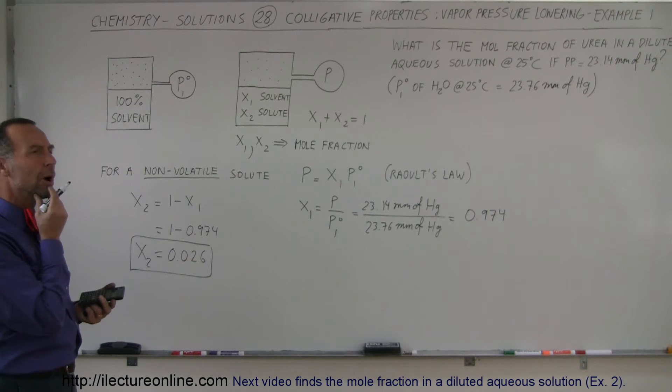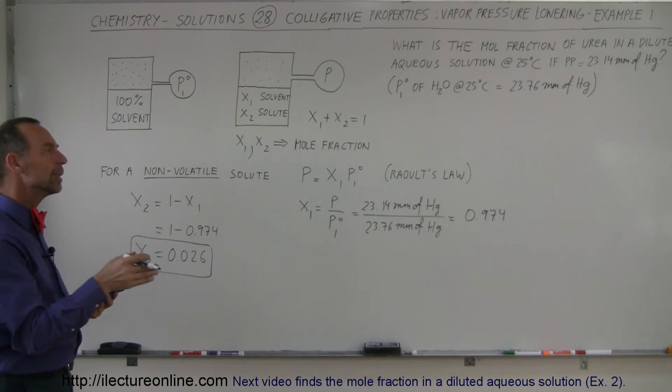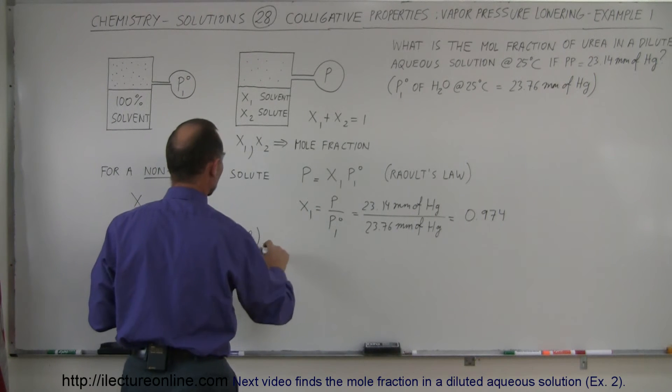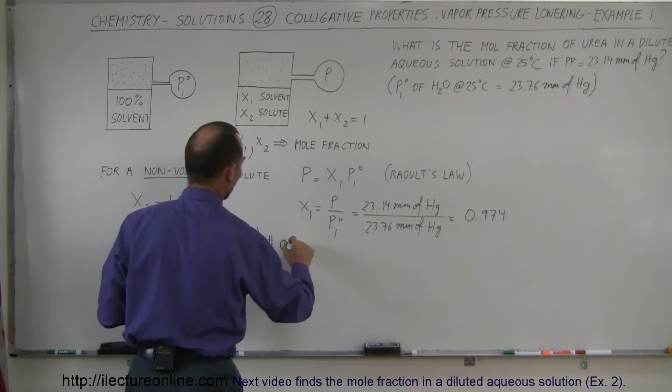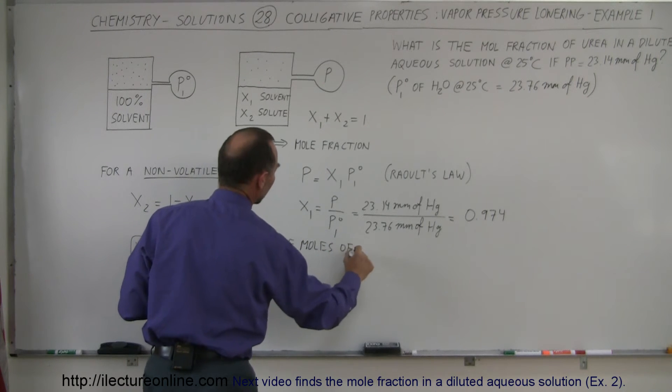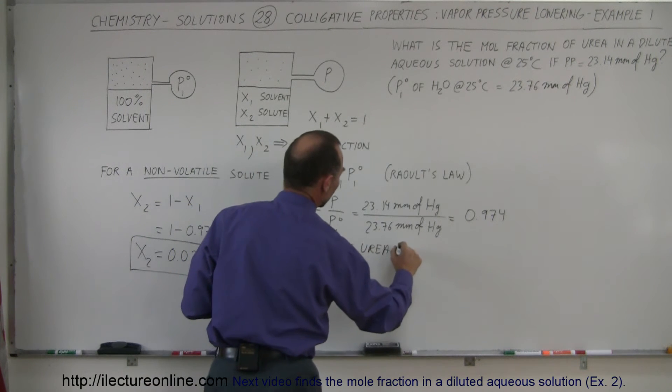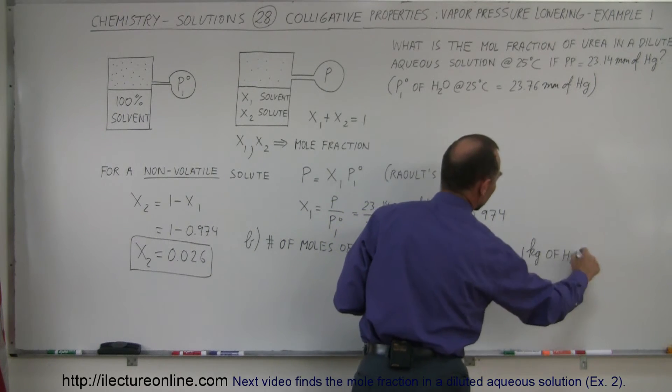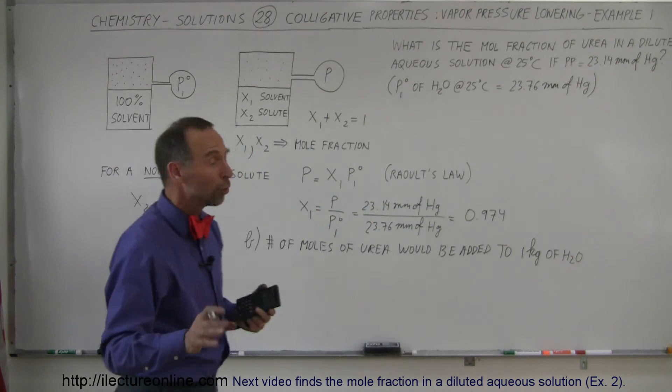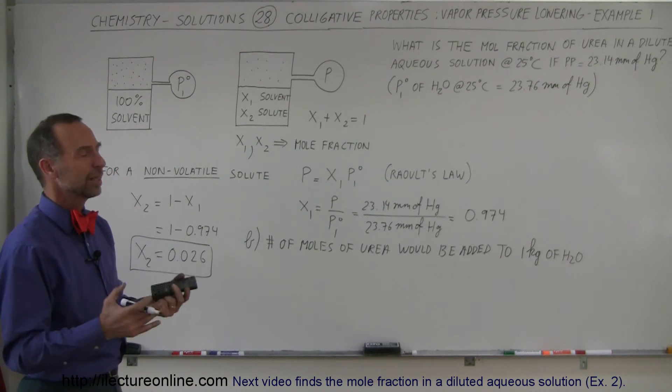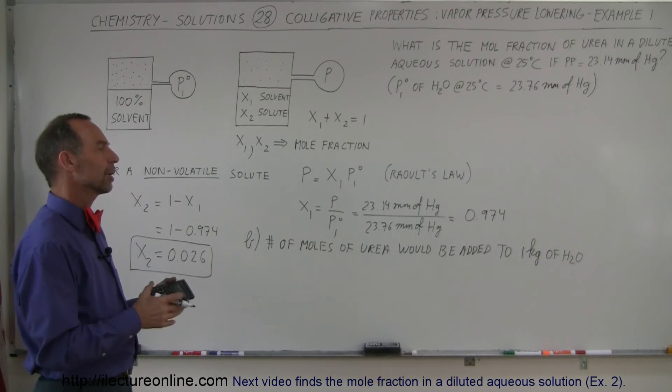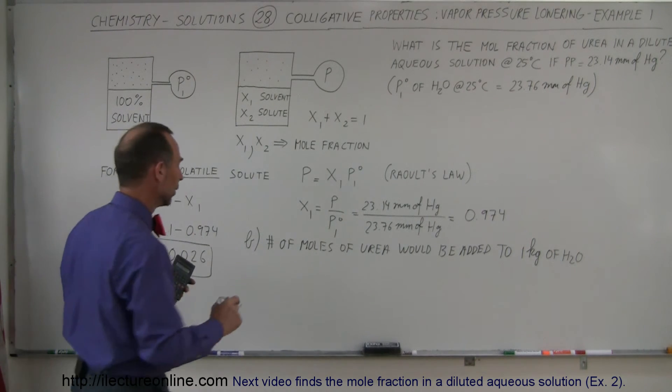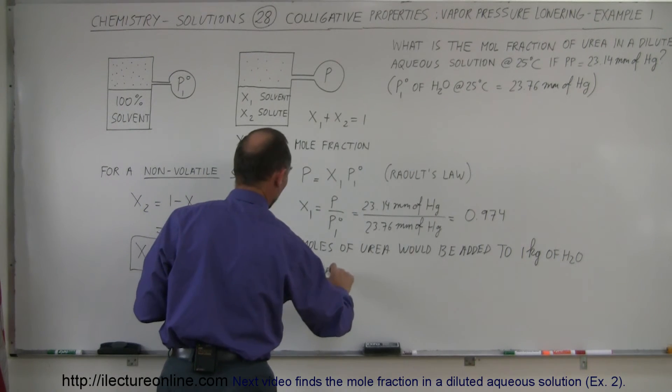What if we want to know how many moles of urea we would need to add to 1 kilogram of water? So let's do a second part B of that. So the number of moles of urea would be added to 1 kilogram of water. All right. Well, let's find out how many moles 1 kilogram of water is. That's 1 liter.